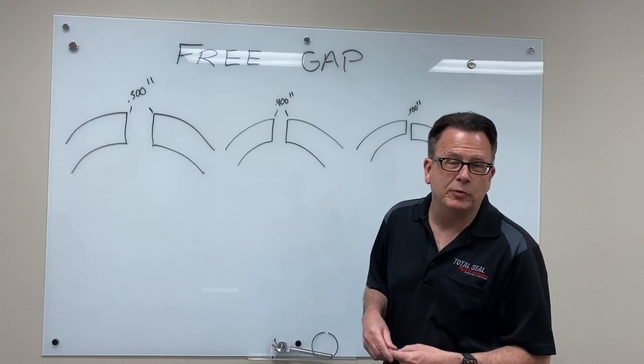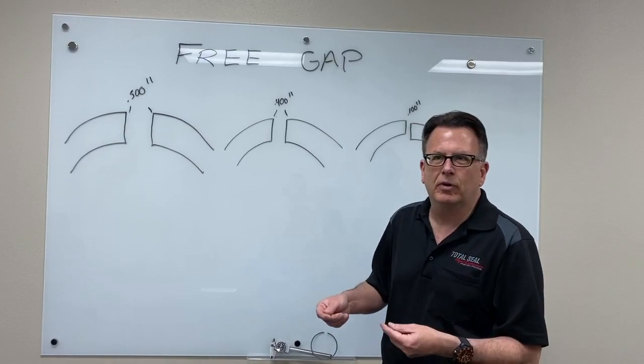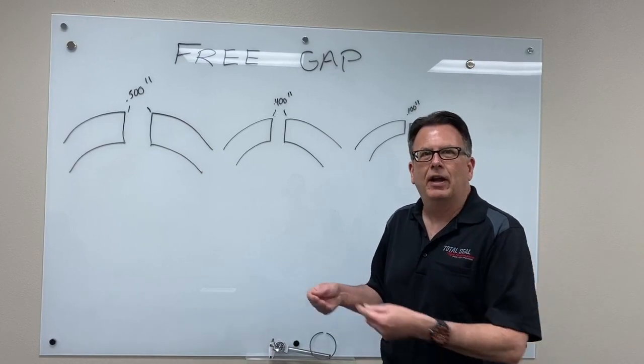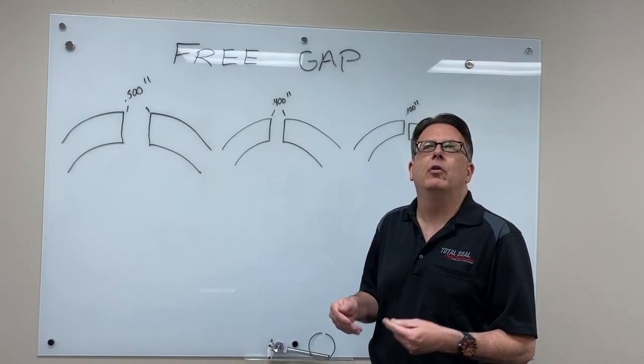When we disassemble an engine that's been raced, we're always looking at all the parts. We're looking at bearing condition, valve spring pressures, how the rings are wearing, how the cylinders are wearing. But one of the things that you can monitor and look at is what is known as free gap.